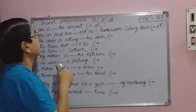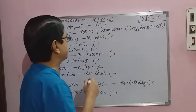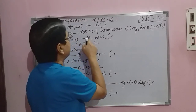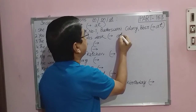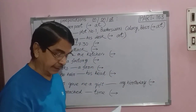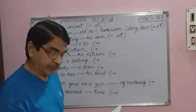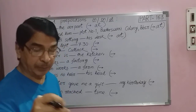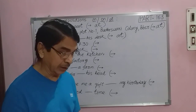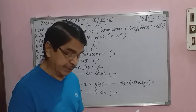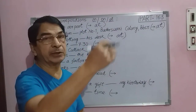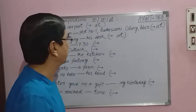Question number three: The child is sitting ___ a desk. Here the preposition AT is used. AT is used for a point of place — a specific point of something. For example: at the end of the village, at the bridge, at the top of the hill, at the bottom of the hill. These all indicate a specific point or location.